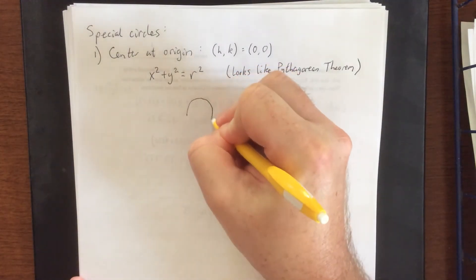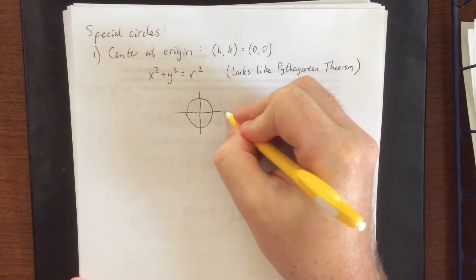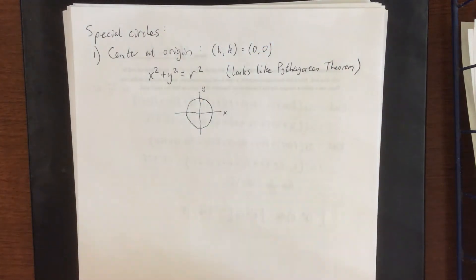So when you have a circle whose center is at the origin generally draw the circle first, x-axis, y-axis, that'll put the center right at the origin right there.